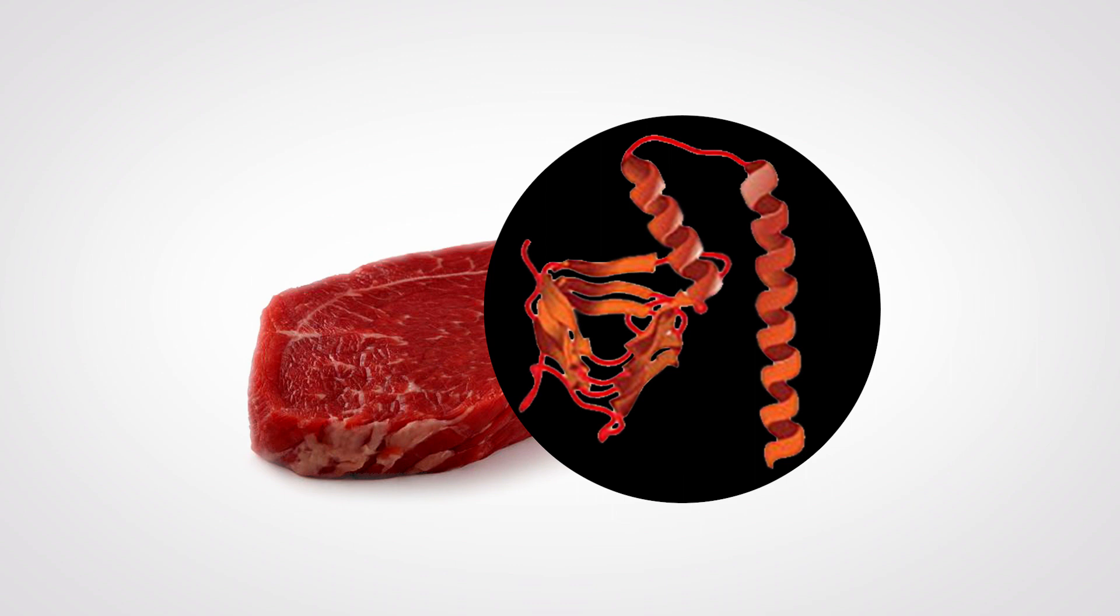As a result, prions have been found in red meat. When someone eats this infected red meat, prions can multiply in their body and wreak havoc on their immune systems.